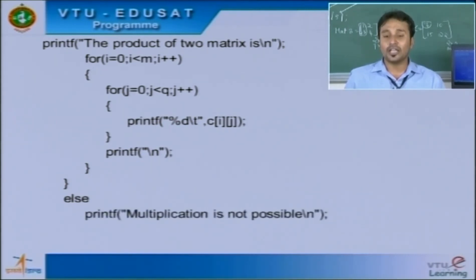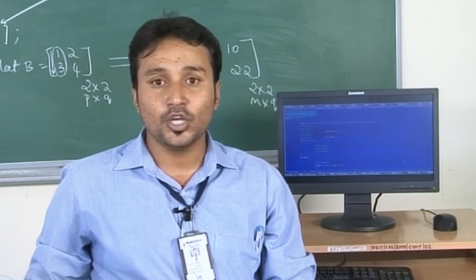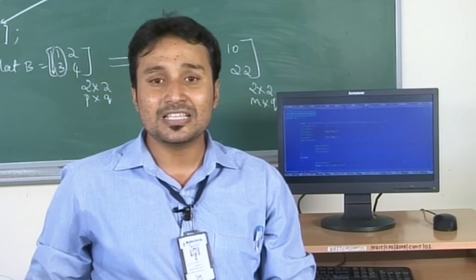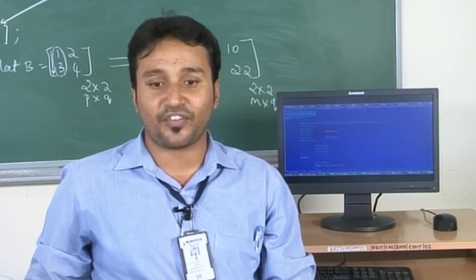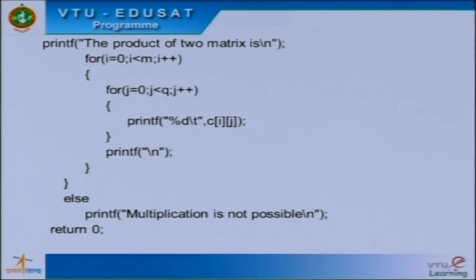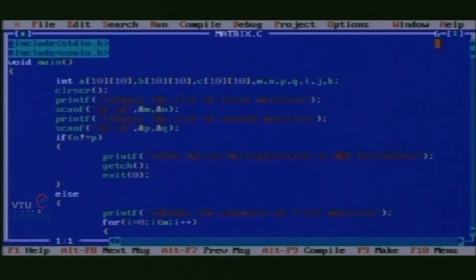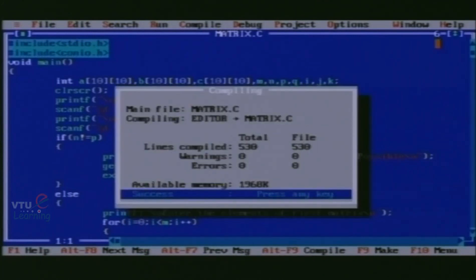This is the main logic and program for matrix multiplication. As we know, in the very first condition we checked for matrix compatibility — the number of columns in the first matrix must always be equal to the number of rows in the second matrix. If that condition fails, we print a suitable message: 'matrix multiplication is not possible'. Since the main function is declared with integer data type, we have return 0 at the end. To compile the program, we use the keys Alt+F9. There are no errors or warnings.